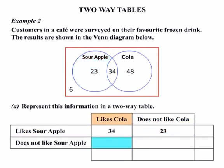Next, those who like Cola but don't like Sour Apple — that's 48 customers. Then, those who don't like Cola and don't like Sour Apple — they like neither frozen drink. That's everything outside the circles in the Venn diagram, which is 6 customers.